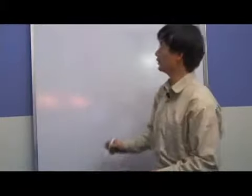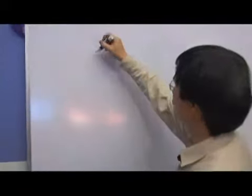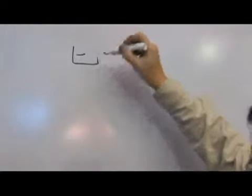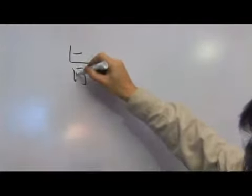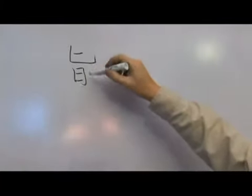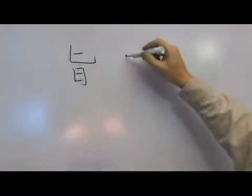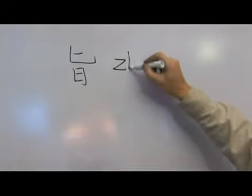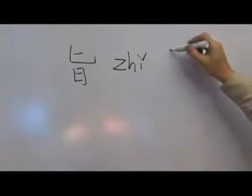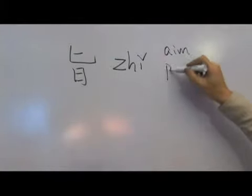The next character we are going to talk about is zhī. It starts with the radical b, and then underneath it is zhī, the sign zhī, which means aim or purpose.